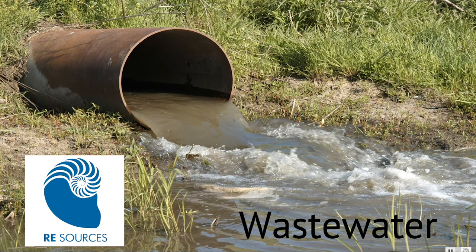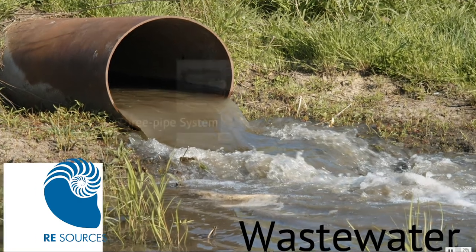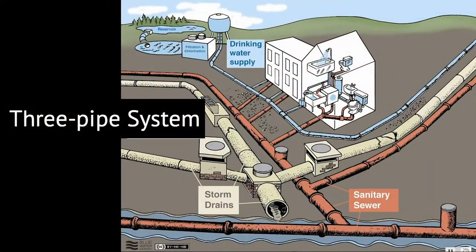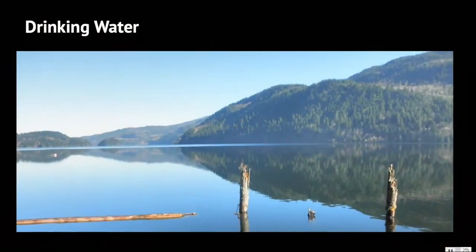Let's start by looking at how water is piped into and out of our houses and off of our streets. There are three main pipe systems: drinking water pipes, sewer water pipes, and stormwater pipes. Let's take a closer look at each of these three pipe systems in Bellingham, Washington.